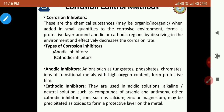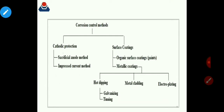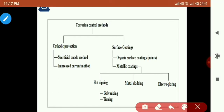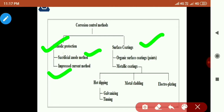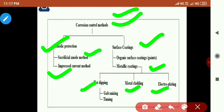Whenever you are asked about corrosion inhibitors, you can express that there are two types: anodic and cathodic inhibitors. Corrosion control methods may be classified into various types, but two important ones are cathodic protection and surface coatings. Under cathodic protection there are two types: sacrificial anodic protection (galvanic protection) and impressed current cathodic protection. Surface coatings include organic, inorganic, and metallic coatings — and metallic coatings include hot dipping, metal cladding, and electroplating.